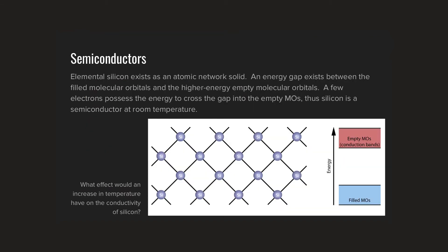What we're going to look at here is a topic that has come up more frequently in recent AP Chemistry questions: the concept of a semiconductor. Looking at the diagram of elemental silicon on the page, silicon exists as an atomic network solid — at each lattice point there is a silicon atom. In terms of that atomic network solid, what's holding this thing together are covalent bonds between the adjacent silicon atoms. The atomic orbitals describe the positions those electrons occupy, or the shapes of the regions in space where those electrons are found, based upon the relative energy levels of those electrons.